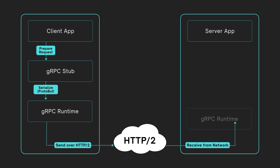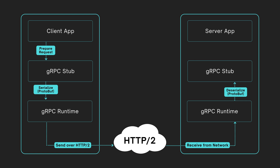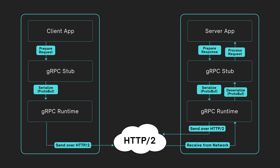On the server side, gRPC receives the request at the runtime layer. The server stub deserializes the binary data into a usable format using protobuf. The server application then processes the request and prepares the response. Once ready, the server application hands the response to the server stub, which serializes it using protocol buffers again.